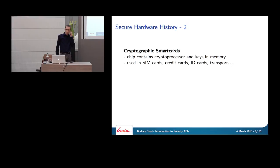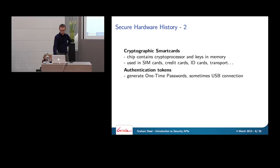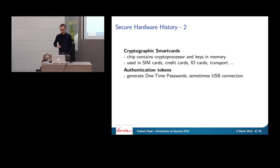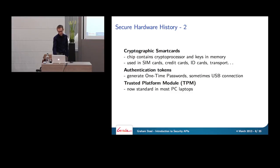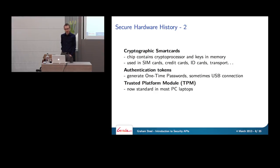Smart cards are now a very widely deployed example of security APIs. The chip contains a little crypto processor and memory for keys. Thanks to SIM cards they're the most widely deployed piece of cryptographic hardware. They're also in credit cards, ID cards, and transport passes. Authentication tokens generating one-time passwords also contain crypto processors. Most PC laptops have a Trusted Platform Module, but unfortunately hardly anyone turns it on. A new version of the TPM is coming out with a much richer security API, to which Microsoft have applied some formal analysis techniques.